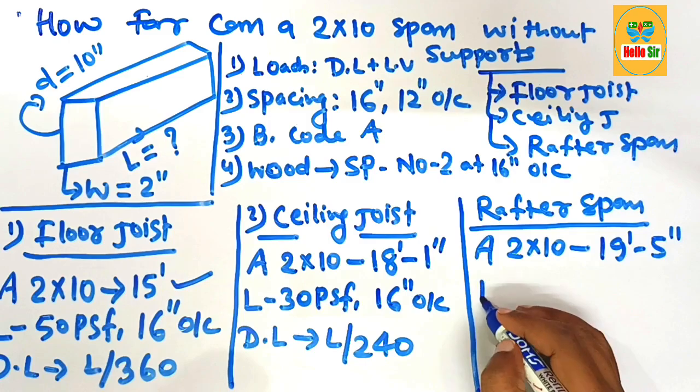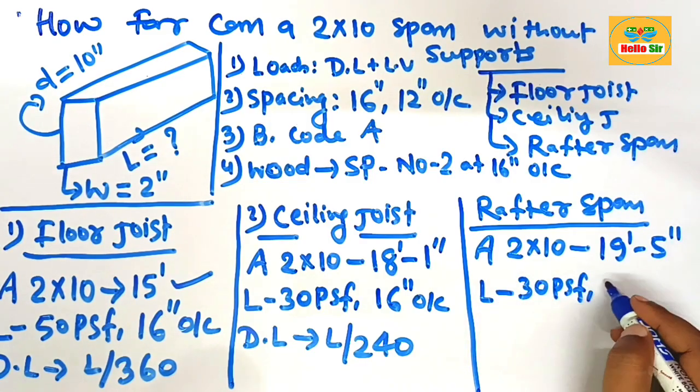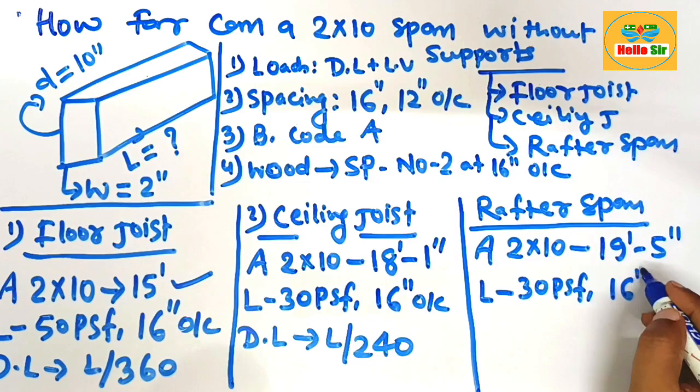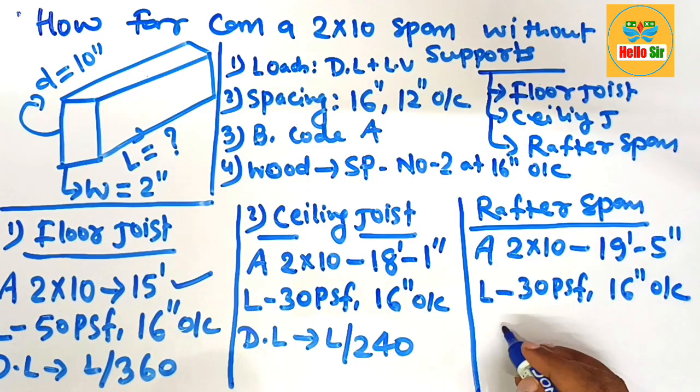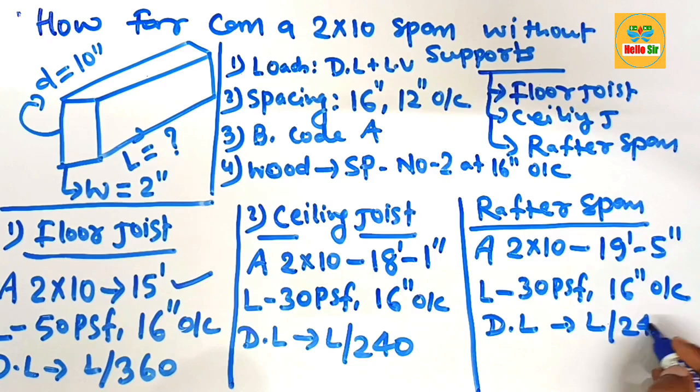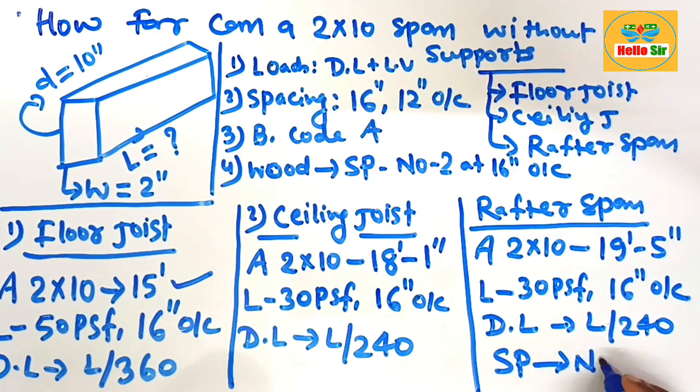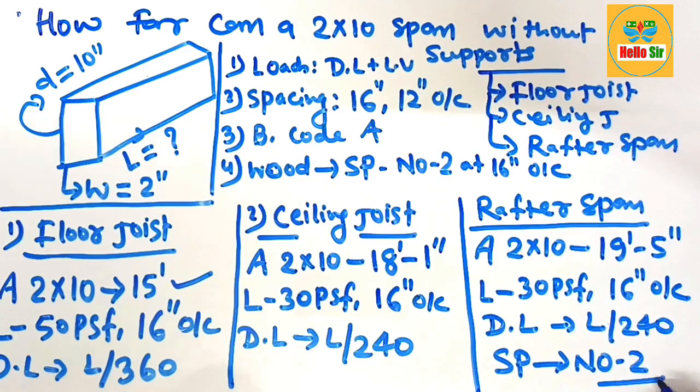The spacing that is 16 inches on center, and the deflection limit that is L by 240, and the wood species that is Southern Pine number 2 grade of wood species.